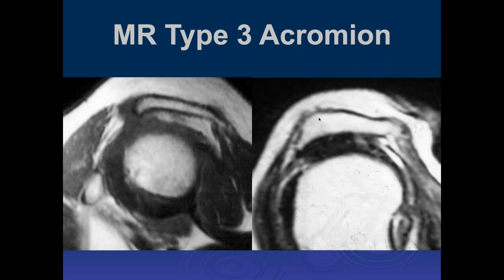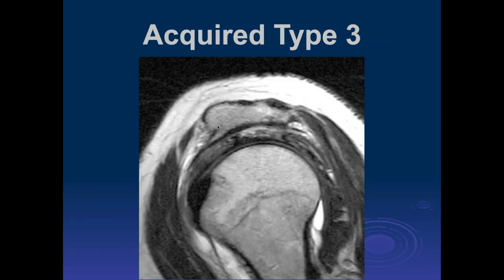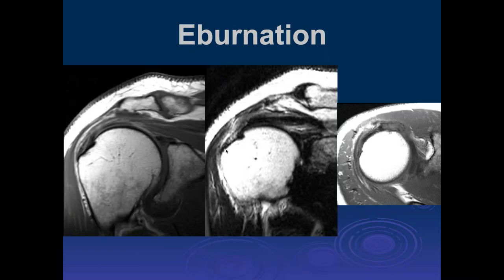Neer believed that for many patients, impingement came first and rotator cuff tears came second. Most people no longer believe that's the most common presentation. In another case, you can see an acquired osteophyte with a lot of tendinosis and increased signal intensity in the anterior supraspinatus tendon underneath the osteophyte.